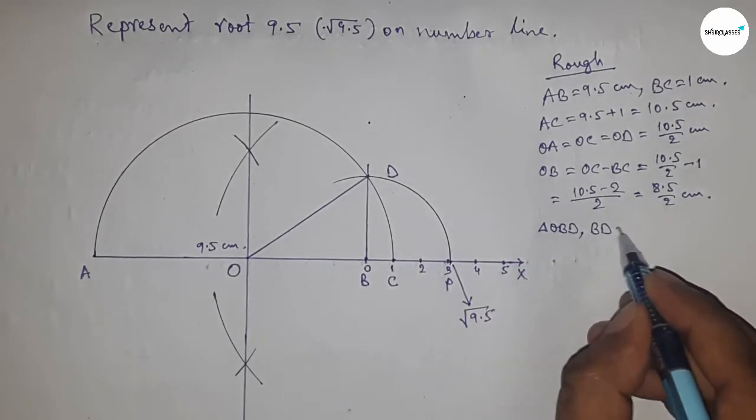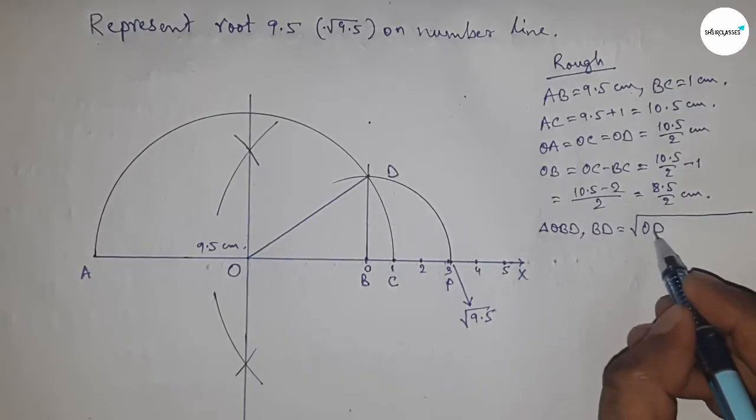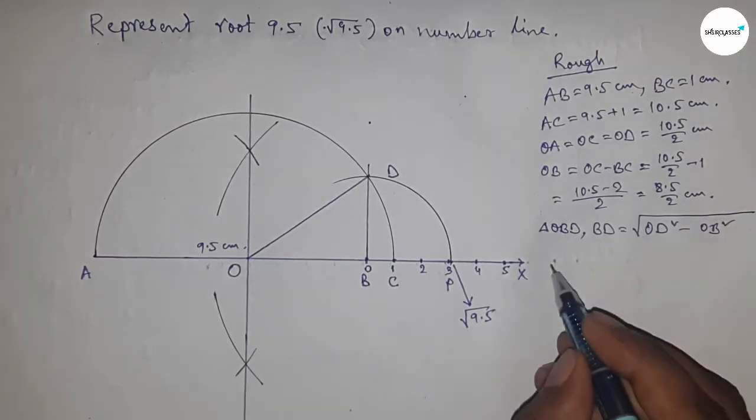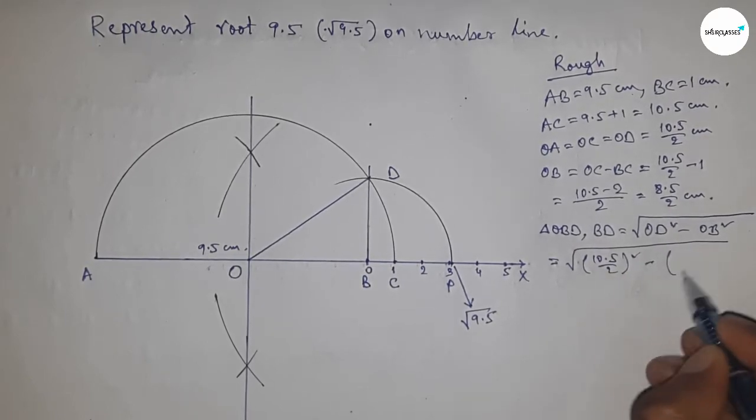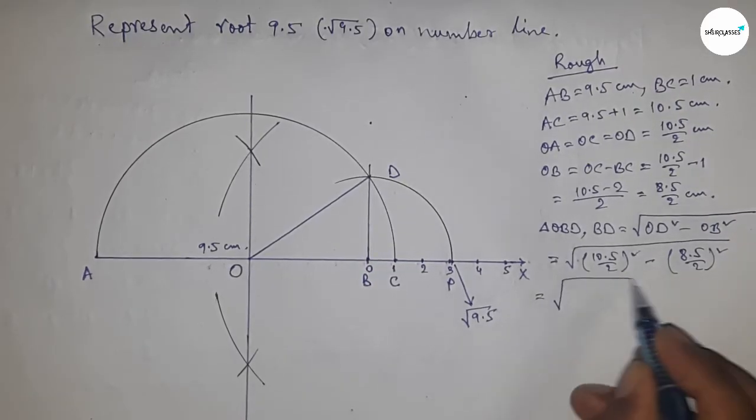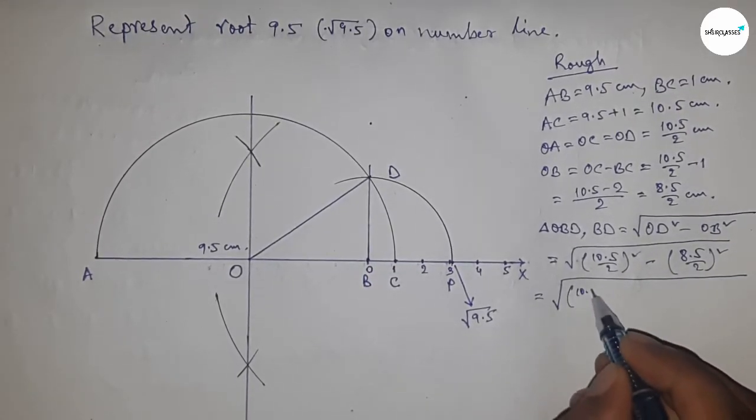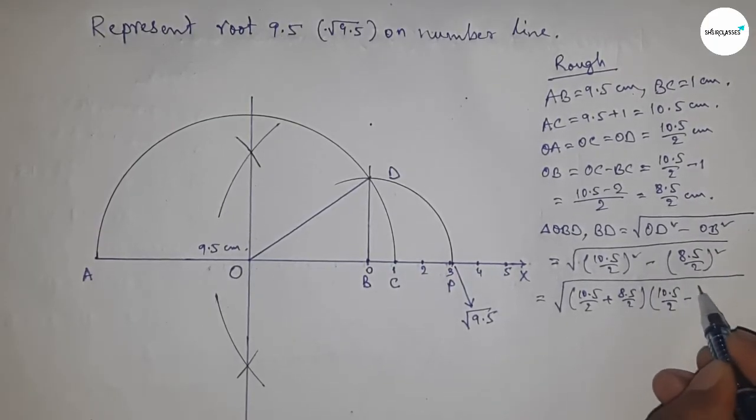Putting the values of OD and OB, I'll use the formula a² - b² = (a + b)(a - b). Applying this formula: (10.5/2 + 8.5/2)(10.5/2 - 8.5/2) = (19/2)(2/2).